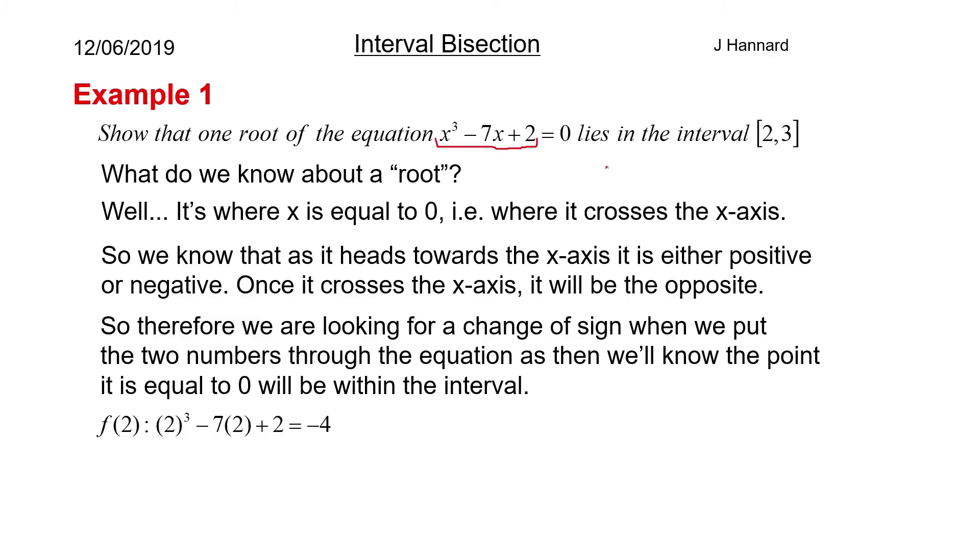So if we put two through, we get 2 cubed minus 7 times 2 plus 2 which is 8 minus 14 plus 2. That's minus 4. So that's negative. Put a 3 through. You get 3 cubed minus 7 times 3 plus 2. So you get 27 minus 21 plus 2 which equals 8 and that is positive. So we've had a change of sign. So that means that the x value that you put in to get y equals 0 is between 2 and 3.